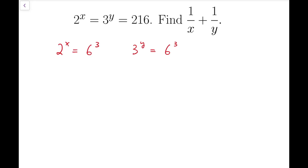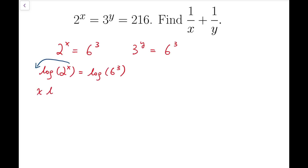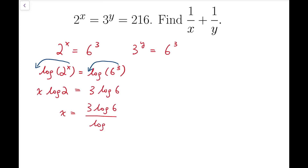We can take logarithms on both sides. So log of 2 to the power of x equals log of 6 to the power of 3. Then we can move the index to the side of the logarithm, giving us x times log 2 equals 3 times log 6. So x is equal to 3 times log 6 over log 2.